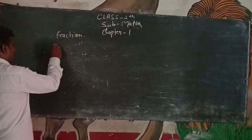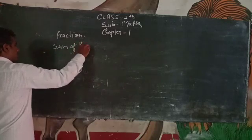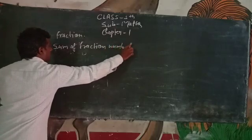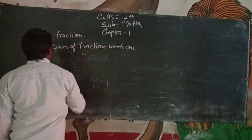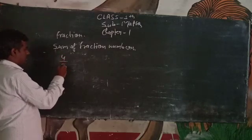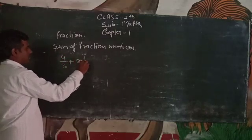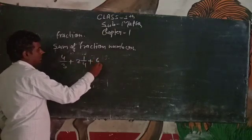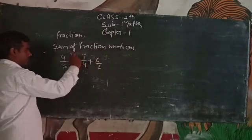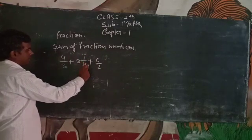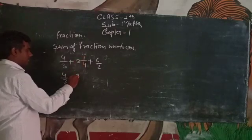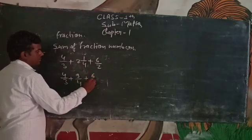Sum of fraction numbers. We can understand with example: 4 upon 3 plus 2 whole number 1 upon 4 plus 6 upon 2. First 2 whole number 1 upon 4 in the form of mixed fraction we convert into improper fraction. 4 upon 3 plus 4, 2 jatay hain 9 upon 4 plus 6 upon 2.